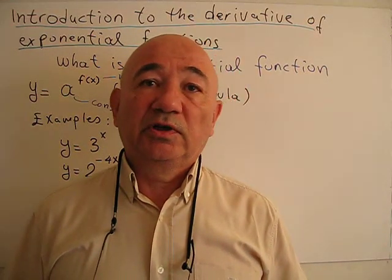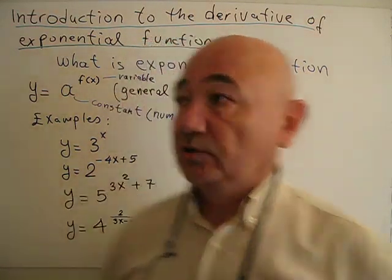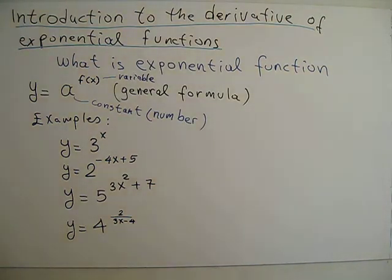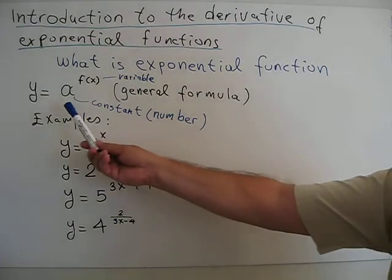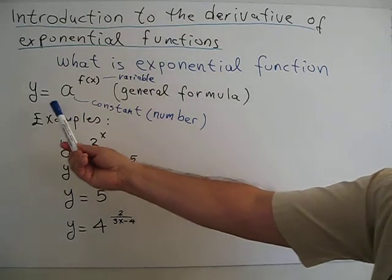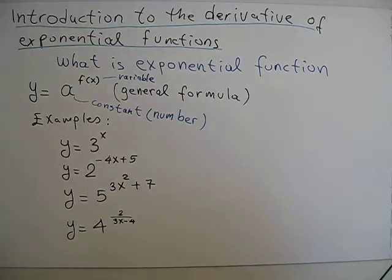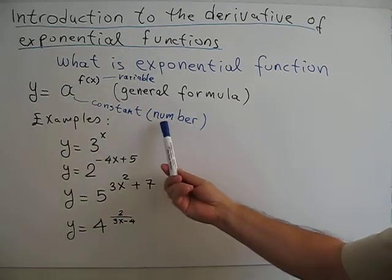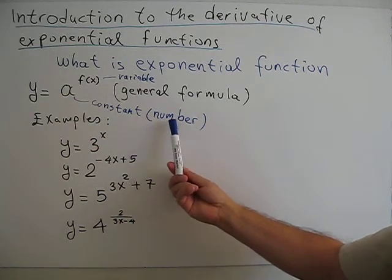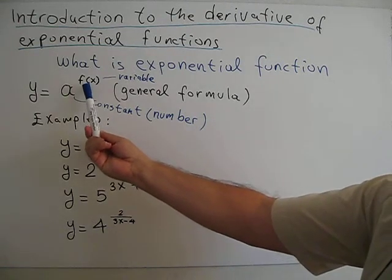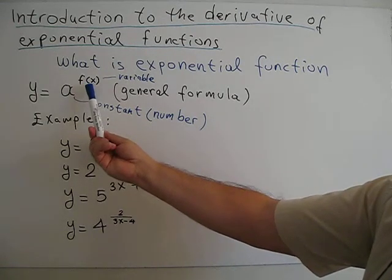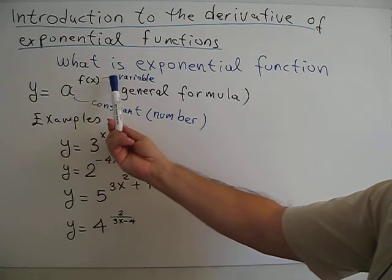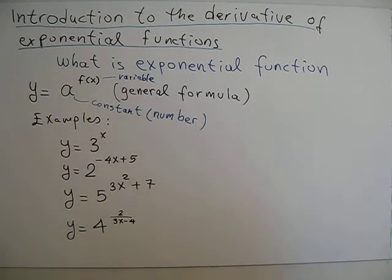I am going to talk about the derivative of exponential functions. What is an exponential function? A typical exponential function is y equals a to the power f(x). In this function, the base is a, which is constant — it represents a fixed number, so it doesn't change. But the exponent is f(x), or it can be x, meaning it is a variable, so it changes.